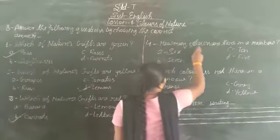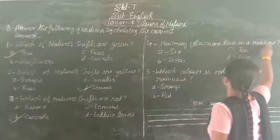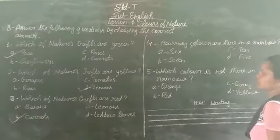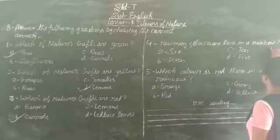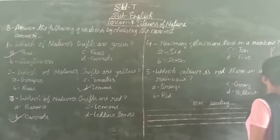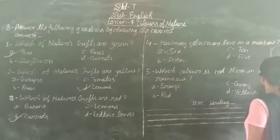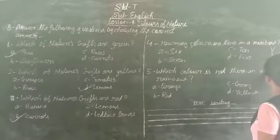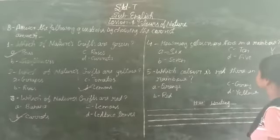Fourth, how many colors are there in a rainbow? One, two, three, four, five, six, seven, eight. What do you think? Seven.